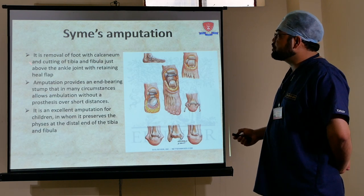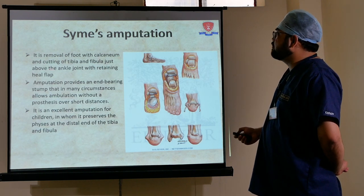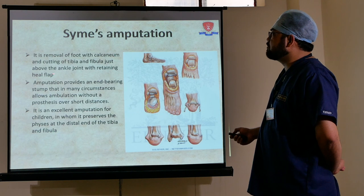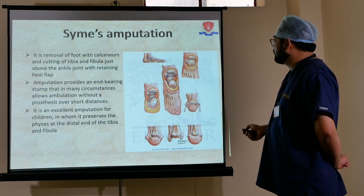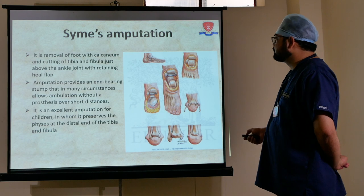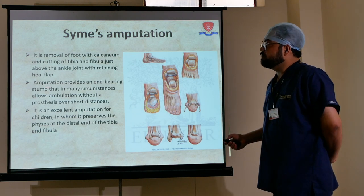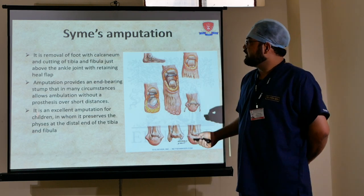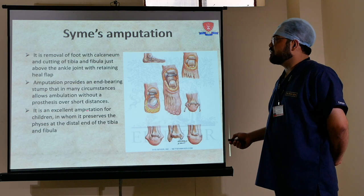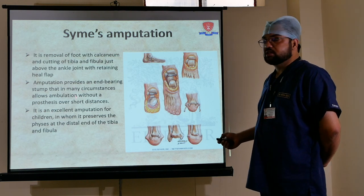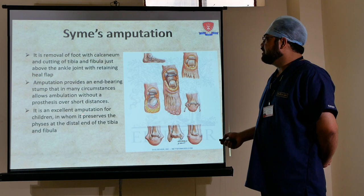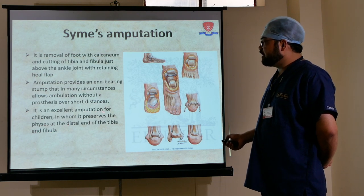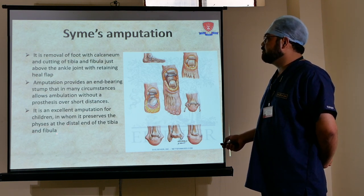Syme's amputation is the removal of the foot by cutting the tibia and fibula just above the ankle joint, with a remaining heel flap. It provides an end-bearing stump that in many circumstances allows ambulation without a prosthesis over short distances. It is an excellent amputation for children as it preserves the physis of the distal tibia and fibula.